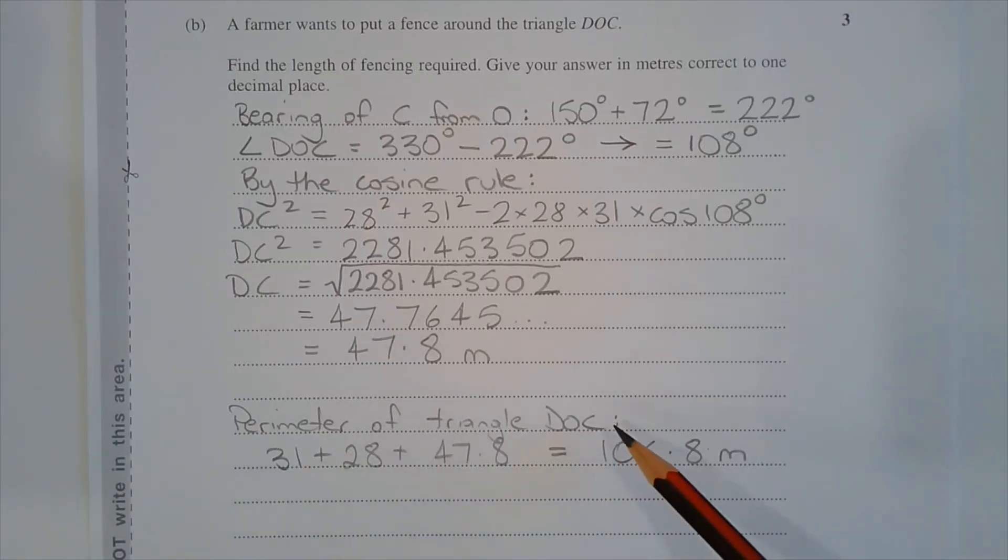The perimeter of triangle DOC is found by adding three sides. So that's 31 metres plus 28 metres plus 47.8 metres and that equals 106.8 metres correct to one decimal place.